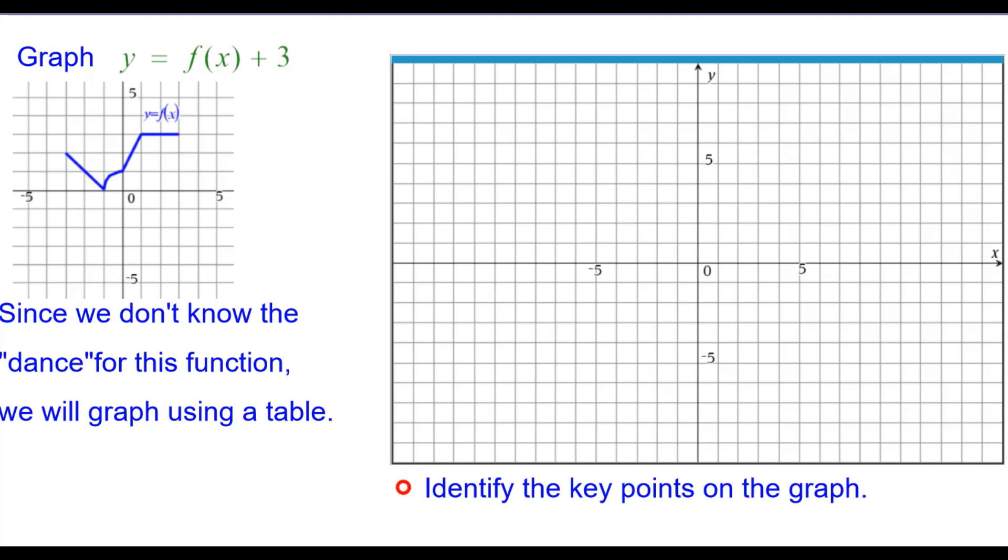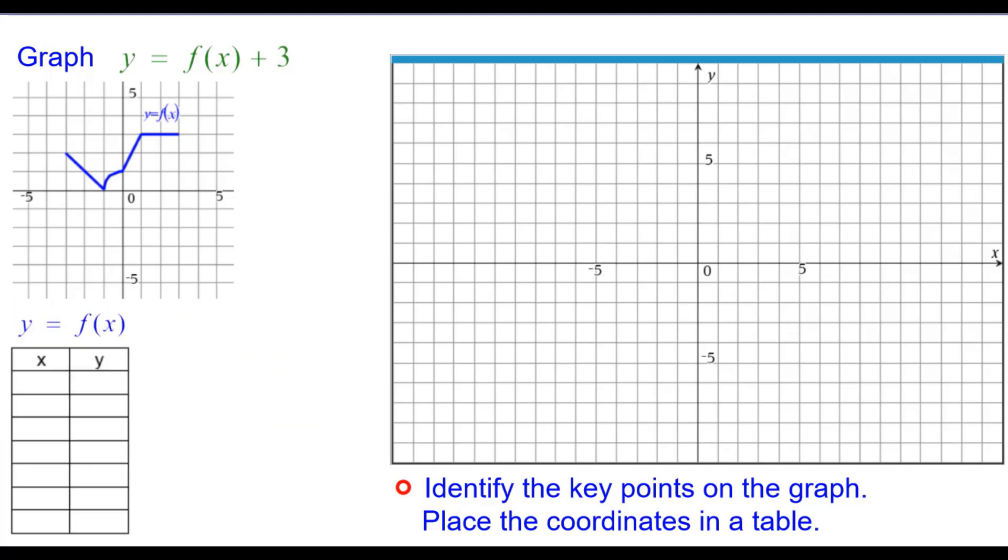To do that, we're going to identify the key points on the graph and then place the coordinates in a table. So there's our table. Going left to right, negative 3, 2 is our first point.